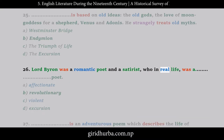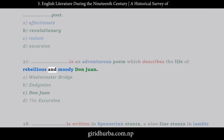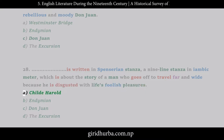Question 26: Lord Byron was a romantic poet and satirist who in real life was: A. affectionate, B. revolutionary, C. violent, D. excursion. Question 27: __ is an adventurous poem which describes the life of rebellious and moody Don Juan. A. Westminster Bridge, B. Endymion, C. Don Juan, D. The Excursion. Question 28: __ is written in Spencerian stanza, a nine-line stanza in iambic meter, about a man who goes off to travel far and wide because he is disgusted with life's foolish pleasures. A. Childe Harold, B. Endymion, C. Don Juan, D. The Excursion.